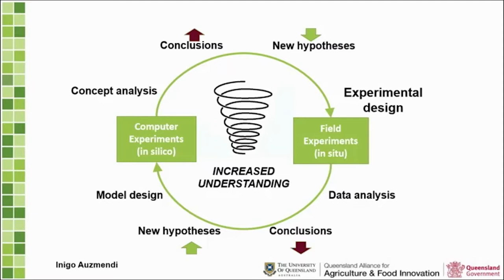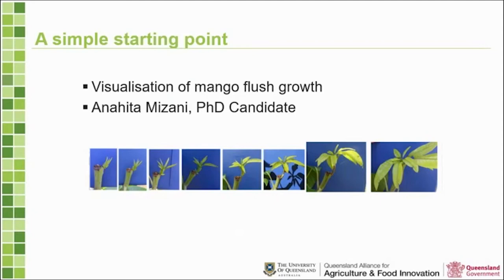Traditionally with field experiments you analyze data, come to conclusions, form new hypotheses about a new tree shape, and do more experiments. What we're adding is a computer design and modeling component. We look at data from the literature and field experiments, identify what mechanisms are actually running in the trees, create models that reflect those mechanisms, run computer experiments, and examine results. We can do many more of these experiments than field experiments, and therefore focus the next set of field work.